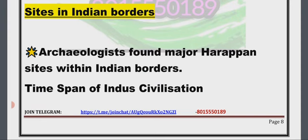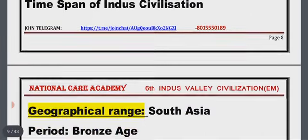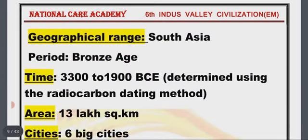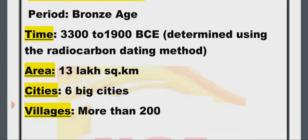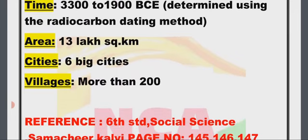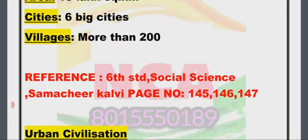Sites within Indian borders: Archaeologists found major Harappan sites within Indian borders. The Indus Civilization — geographical range: South Asia; period: Bronze Age; time span: 3300 to 1900 BCE, determined using the radiocarbon dating method; area: 13 lakh square kilometers; cities: six big cities; villages: more than 200.